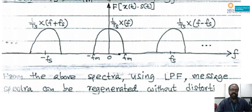I am going to take three different cases: Case 1 — sampling frequency fs greater than twice fm; Case 2 — fs equal to twice fm; Case 3 — fs less than twice fm. We should be able to prove that for Cases 1 and 2 the original signal can be regenerated without any distortion. Case 1 is fs greater than twice fm, and this sampling is known as oversampling, because we are taking more number of samples by closing the switch at every Ts seconds.